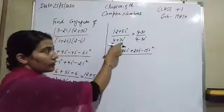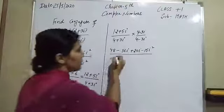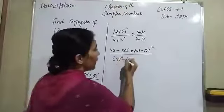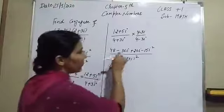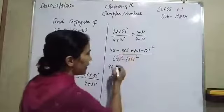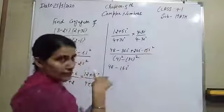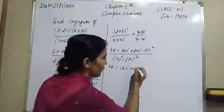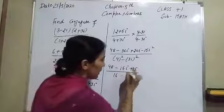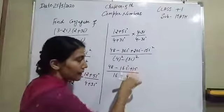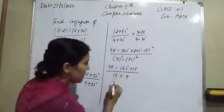In the denominator, a plus b into a minus b gives a squared minus b squared. The value of a is 4 and b is 3 eta. So in the numerator: 48, and minus 36 plus 20 gives minus 16 eta, and eta squared is minus 1 so minus 15 eta squared becomes plus 15. In the denominator: 4 squared is 16 minus 3 squared 9 with eta squared minus 1 giving plus 9. So 48 plus 15 is 63.